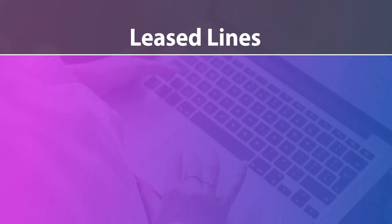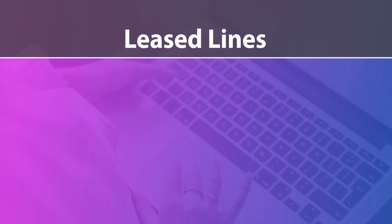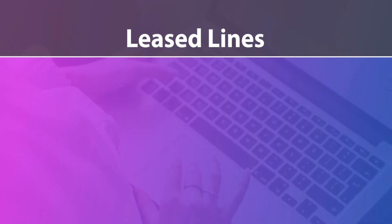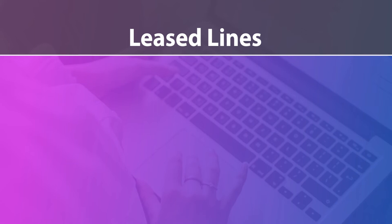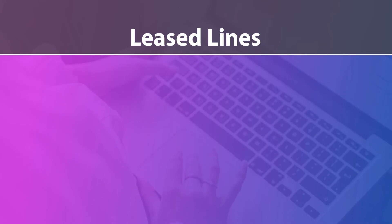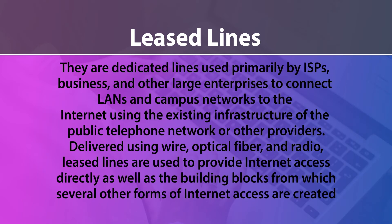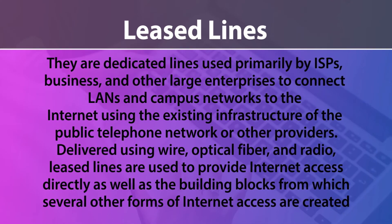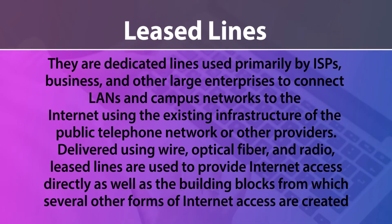Many organizations use leased lines, which normally provide access to the internet round the clock — 24 by 7. They are dedicated lines used primarily by ISPs, businesses, and large enterprises to connect local area networks and campus networks to the internet using the existing public telephone network infrastructure. Delivered using wire, optical fiber, and radio, leased lines are used to provide internet access directly as well as serve as building blocks for several other forms of internet access.